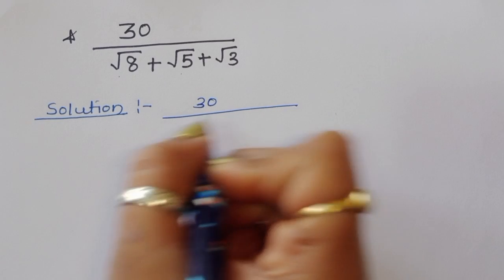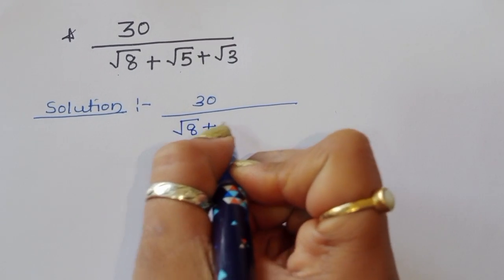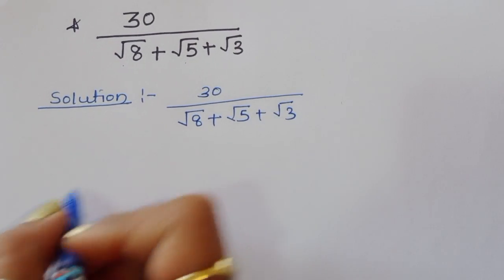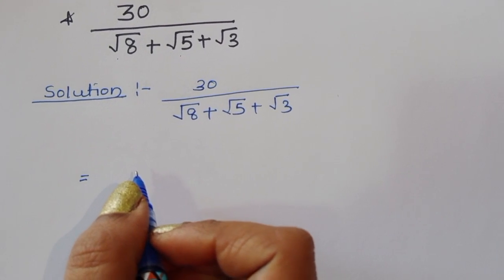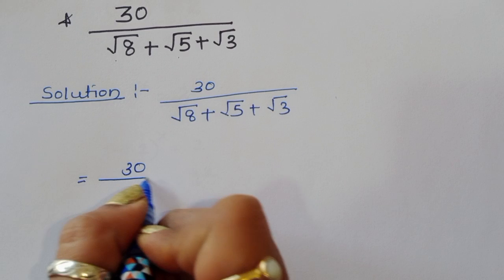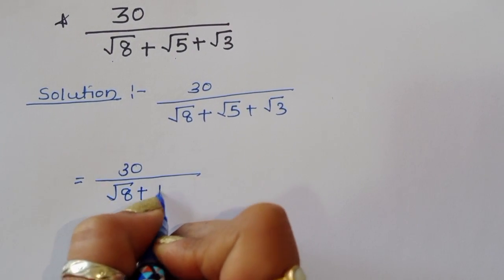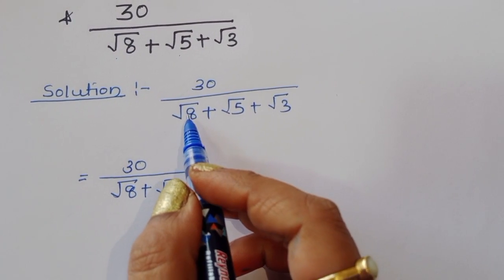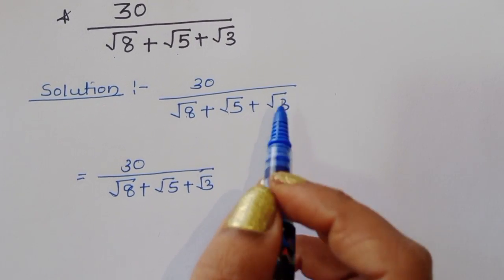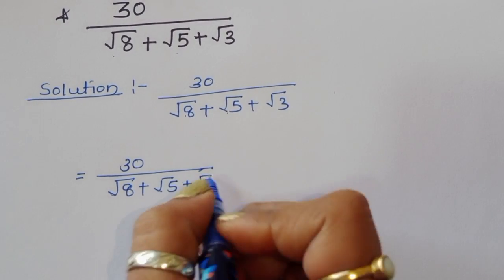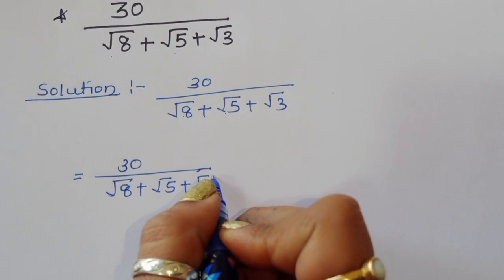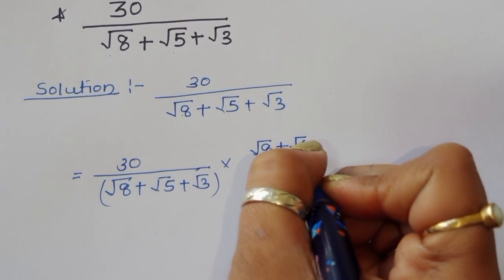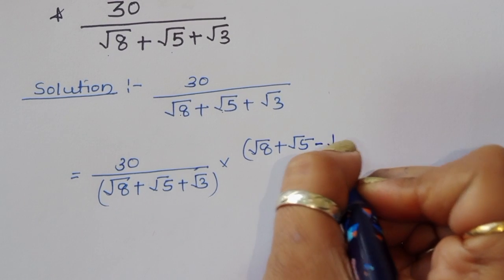We have 30 divided by (square root of 8 plus square root of 5 plus square root of 3). We can multiply and divide the numerator and denominator by (square root of 8 plus square root of 5 minus square root of 3).